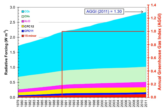At current emission rates, temperatures could increase by 2 degrees Celsius — which the United Nations IPCC designated as the upper limit to avoid 'dangerous' levels — by 2036.